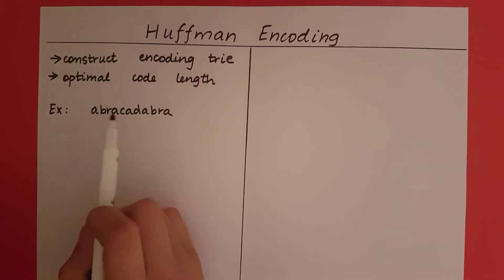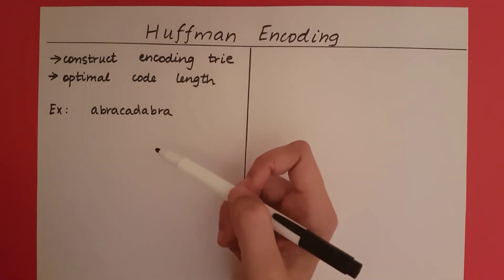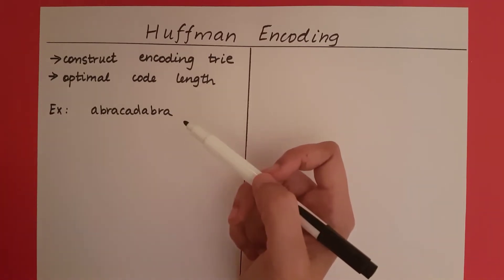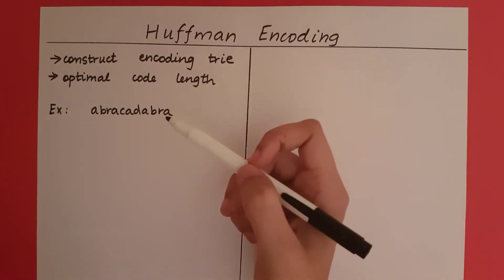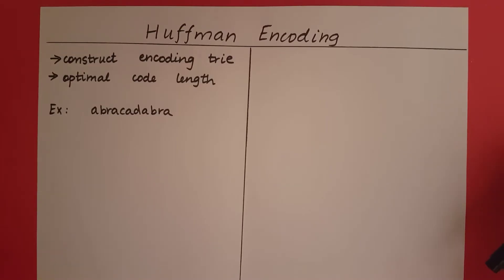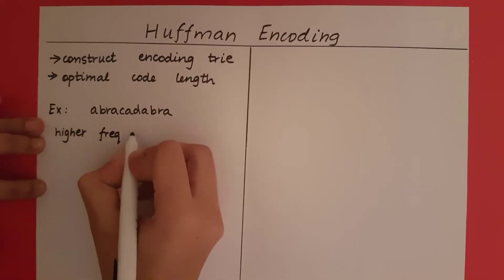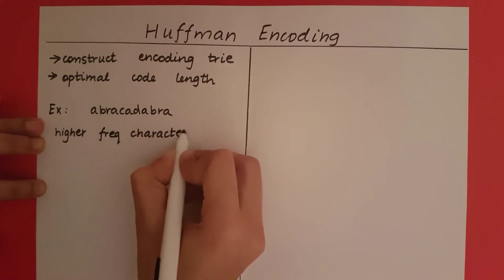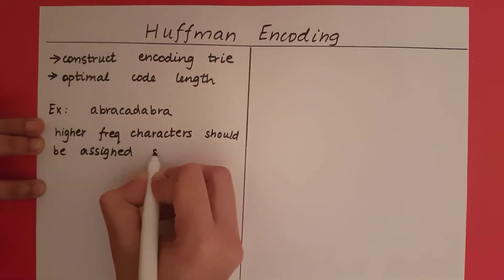Let's take A. A appears five times in this string, so I would want the binary sequence of A to be short — because that's going to appear five times in my final code. If I make that short, I am achieving a much shorter code than if the binary sequence of A is long. So if we keep giving shorter codes to characters with higher frequency, we are ensuring our final code has a shorter length. So what is the main idea of Huffman encoding? Higher frequency characters should be assigned shorter binary sequences.